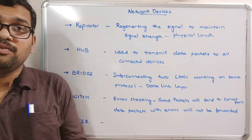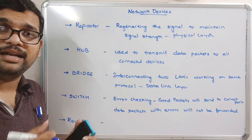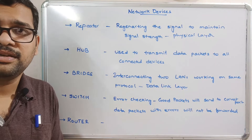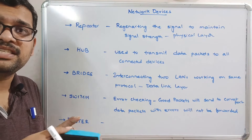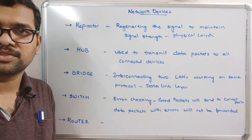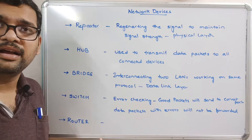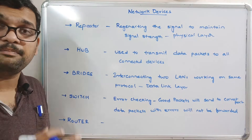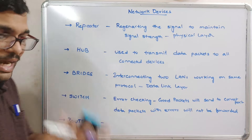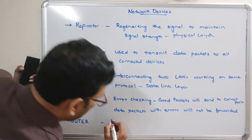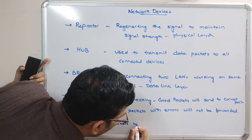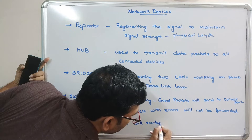The next device is the router. The router collects data and sends it to different ports based upon the IP address, so the data is sent to the destination based on the IP address. All routing algorithms are used here, and the router selects the best routing path through which data packets are sent to the destination.